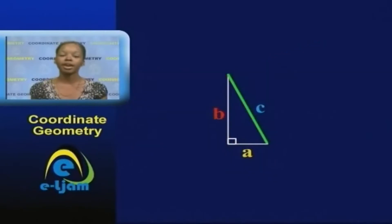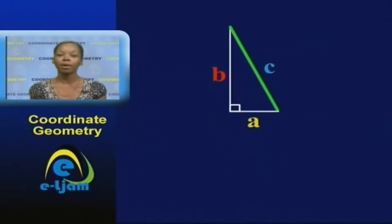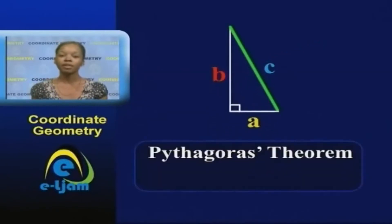The longest side of the right-angled triangle is the hypotenuse, so the formal definition of Pythagoras' theorem is: In any right-angled triangle, the square of the hypotenuse is equal to the sum of the squares of the other two sides.